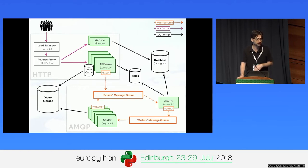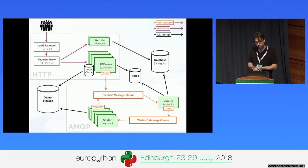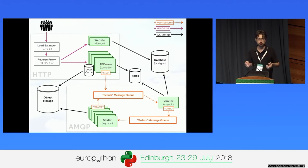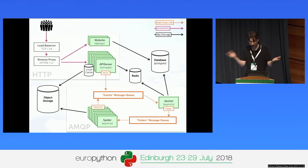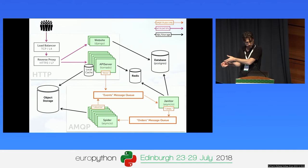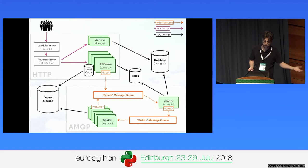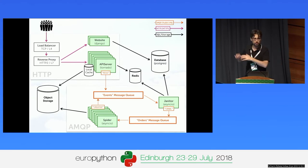The Janitor decides whether the request is legitimate — checking if a domain is flooded or if it's abuse — and if it's legit, it sends a crawl message to another queue. A spider picks it up, opens the URL, makes a screenshot, resizes and compresses it, uploads it, and sends either a 'created' or 'failed' message to the events queue. The Janitor picks that up and updates the status so the API can serve the request next time.